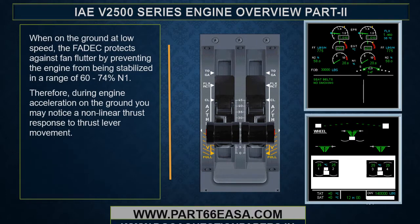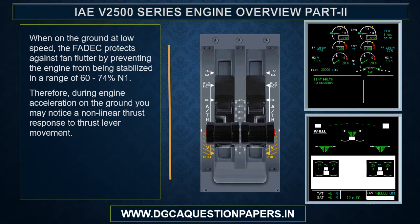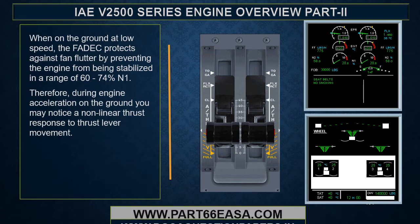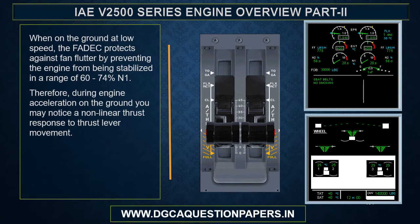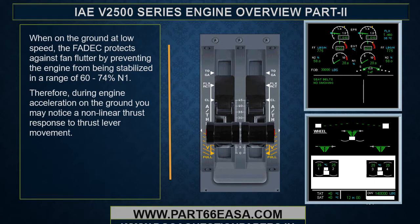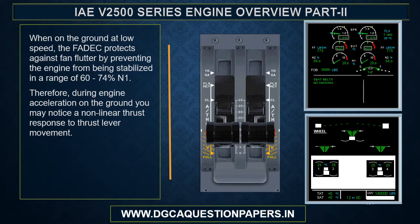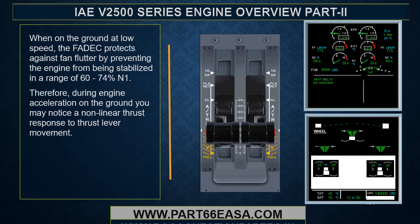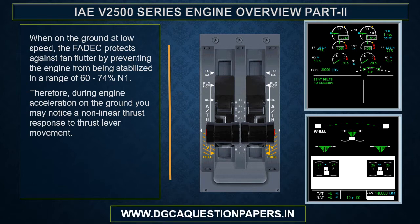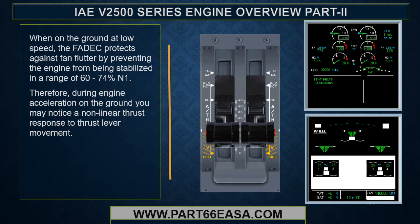When on the ground at low speed, the FADEC protects against fan flutter by preventing the engine from being stabilized in a range of 60 to 74% N1. Therefore, during engine acceleration on the ground, you may notice a non-linear thrust response to thrust lever movement.